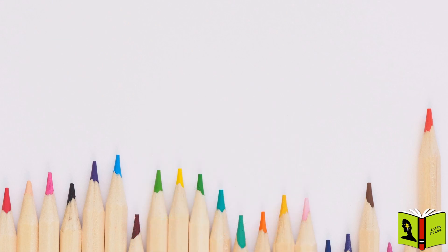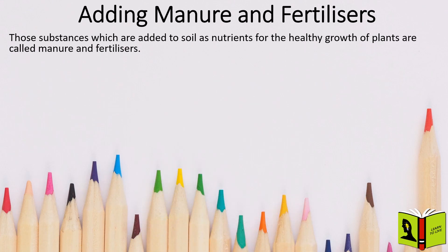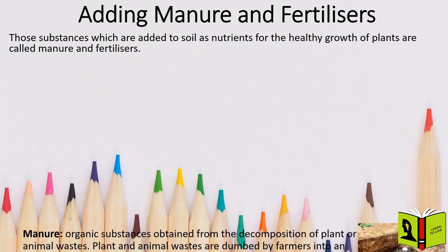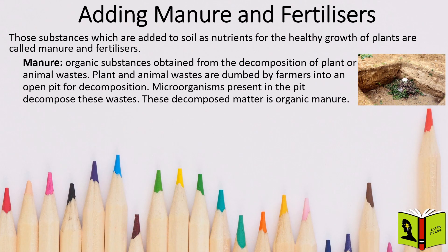Adding Manure and Fertilizers. Those substances which are added to soil as nutrients, for the healthy growth of plants, are called manure and fertilizers. Manure are the organic substances obtained from the decomposition of plant or animal wastes. Plant and animal wastes are dumped by farmers into an open pit for decomposition. Microorganisms present in the pit decompose these wastes. This decomposed matter is organic manure.